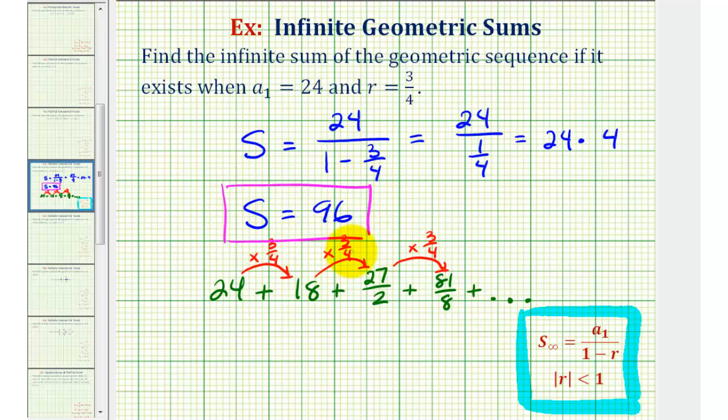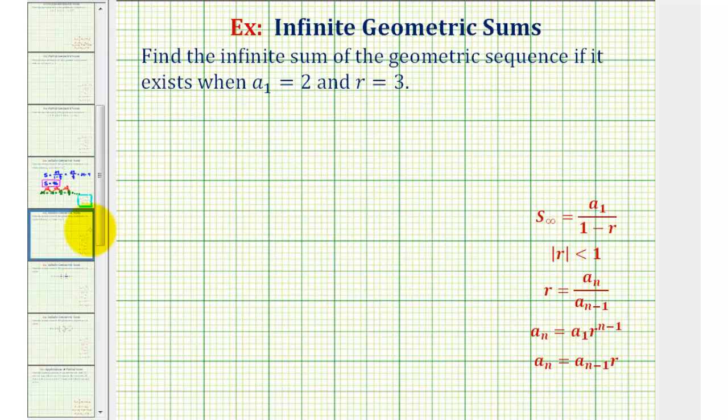Let's look at one more example while we're here. It's the same question, but now the first term a sub one is equal to two, and the common ratio r is equal to three. This problem just emphasizes that in order to find the sum of an infinite geometric sequence, the absolute value of r must be less than one. And since the value of r is equal to three, this infinite sum does not exist.